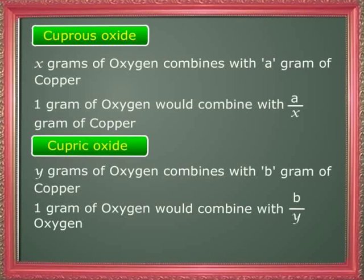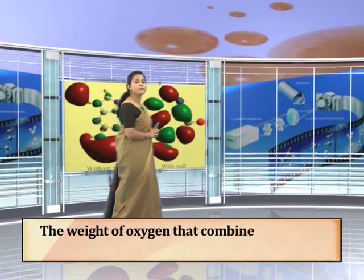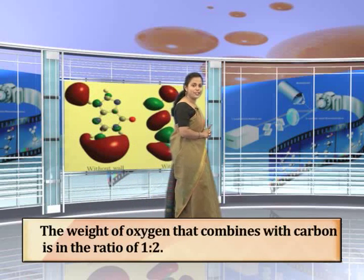Now if you apply the weight values you had noted during the experiment, you will find that the ratio of A/x to b/y is a simple ratio of integers. Applying the values, you will find the ratio to be 2:1. This will also hold true for the formation of carbon monoxide and carbon dioxide — in both cases the weight of oxygen that combines with carbon is in the ratio of 1:2.